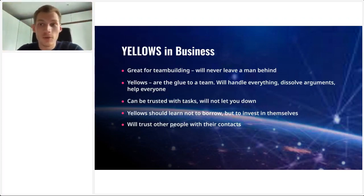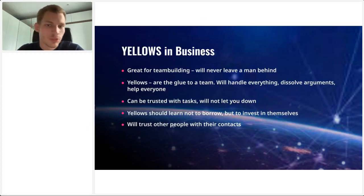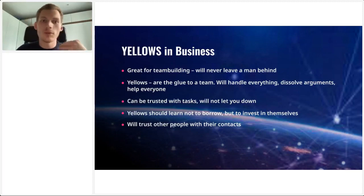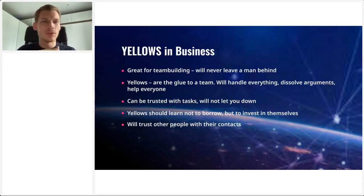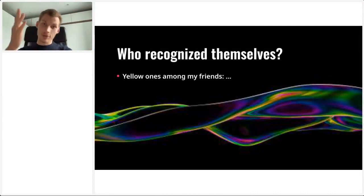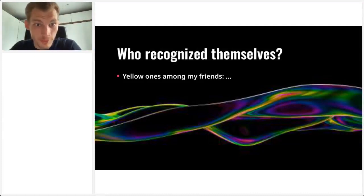They can be trusted with tasks and won't let you down. Yellows should learn not to borrow but to invest in themselves, and they will trust other people with their contacts — they're willing to connect you to others without becoming greedy or jealous. They're really open. You can work directly with them. So who recognized themselves as a yellow person? Write that down in your exercise next to your list of friends and family you believe are yellow at the base.